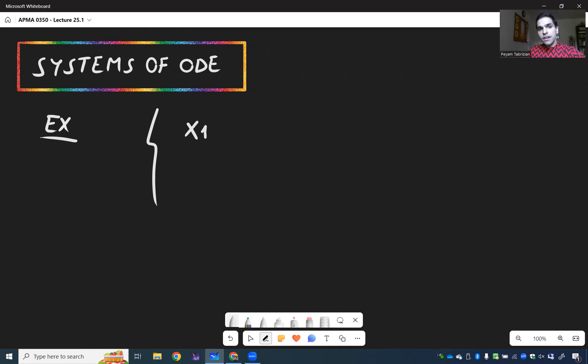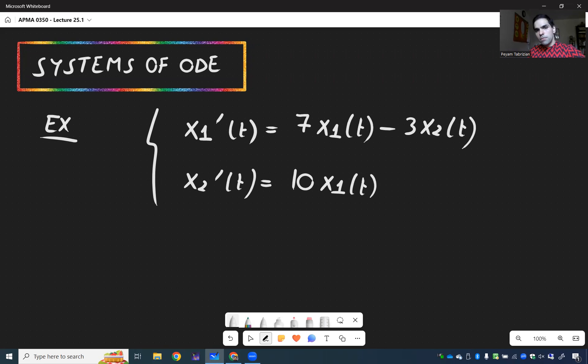where the derivative of the first function is 7 times itself, so far so good, but also minus 3 times the other one. And on the other hand, the derivative of the second function is 10 times the first one minus 4 times itself,